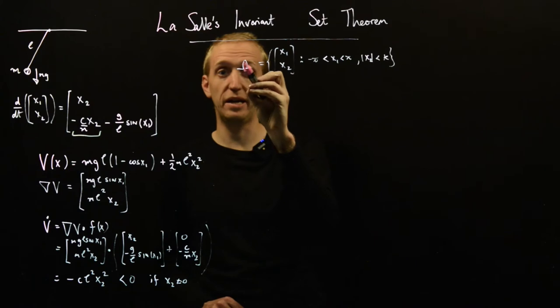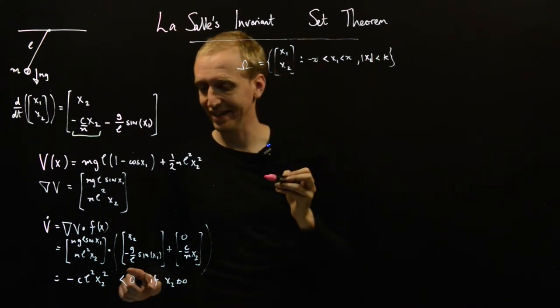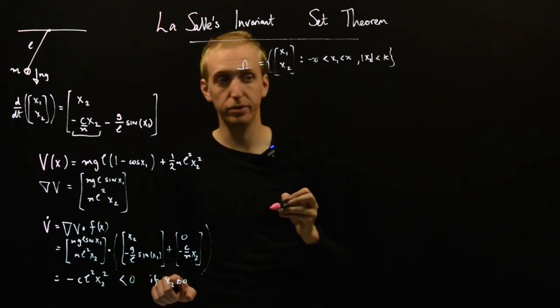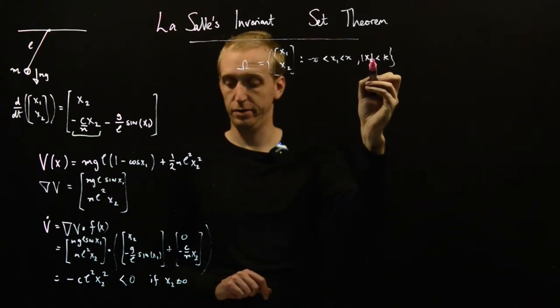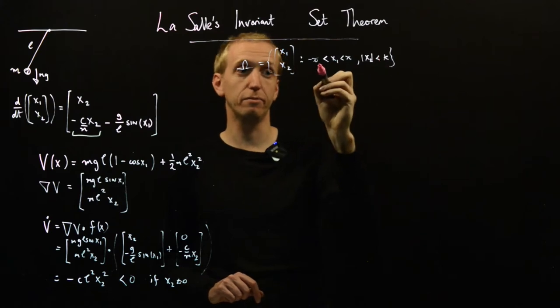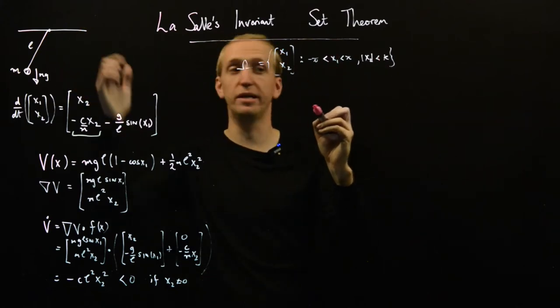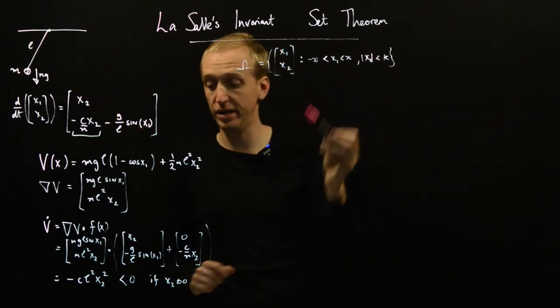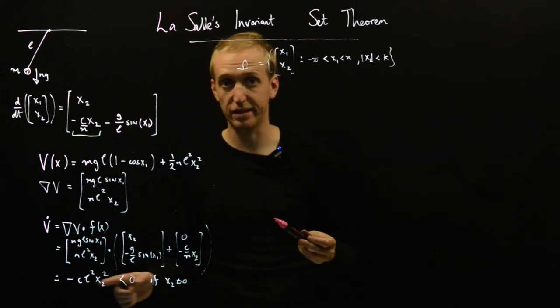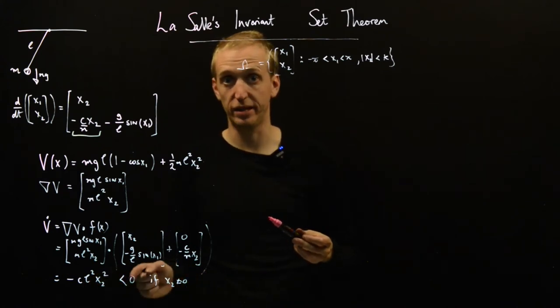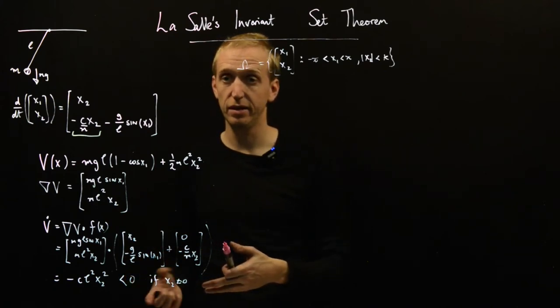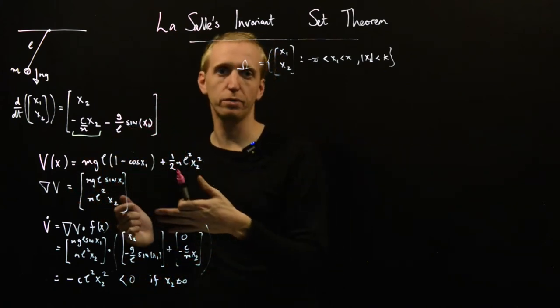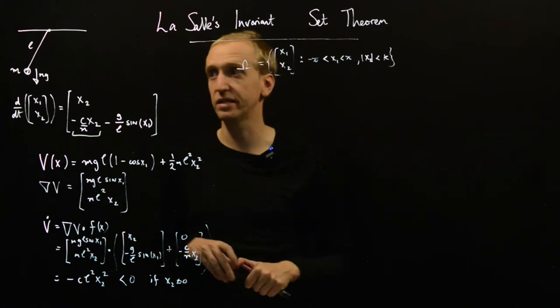And it's less than zero as long as x2 is not equal to zero. But it's quite possible for x2 to be equal to zero and x1 to lie in this range. So there are points within omega for which we only get less than or equal, rather than strictly less than. So we can't conclude asymptotic stability. But now if we think about what is going to happen in this system.